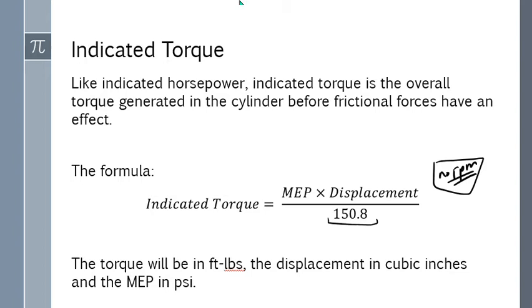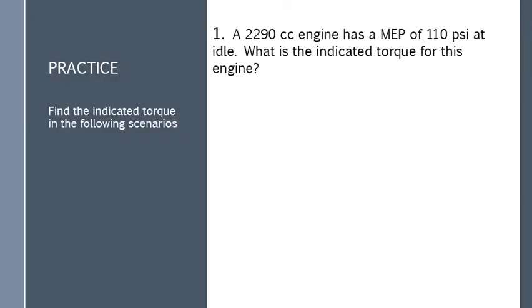Just remember 150.8 or write it down somewhere or use the provided formula sheet. Torque you're going to get in foot-pounds. We're always working in U.S. customary right now. Displacement will be cubic inches, and then the mean effective pressure will be in pounds per square inch.